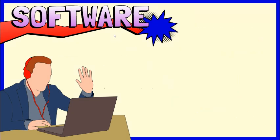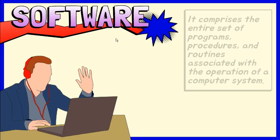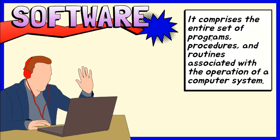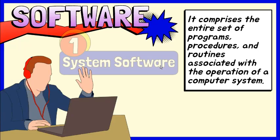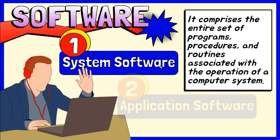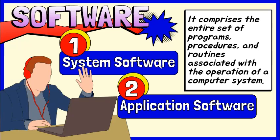Software is defined as the instructions that tell the computer what to do. It comprises the entire set of programs, procedures, and routines associated with the operation of a computer system. It is divided into system software and application software. In this video, we are going to talk about the key differences between these two types.